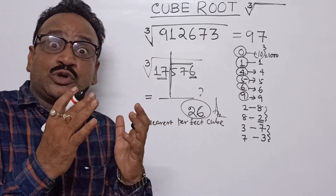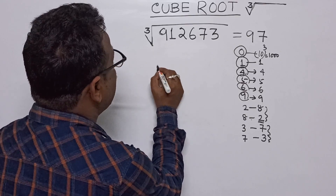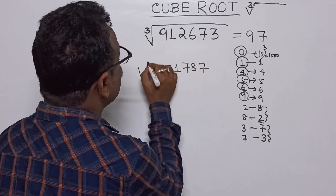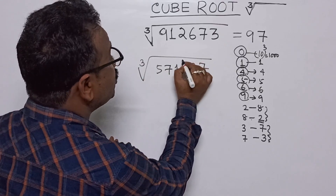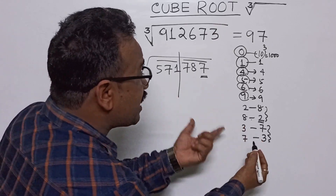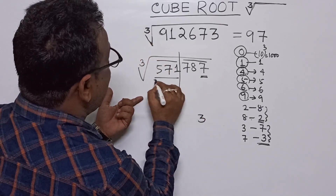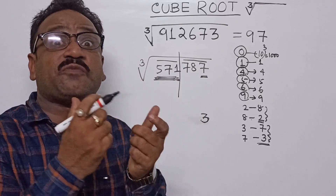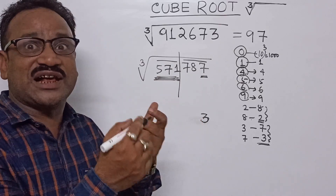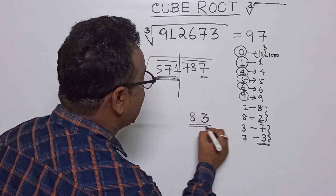Another example: cube root of 571787. Last digit is 7 — 7 means 3 will come as the unit digit. The remaining group is 571. Nearest perfect cube: 8³=512, 9³=729 — so 8³=512 is nearest. So we write 8. Therefore cube root of 571787 = 83.